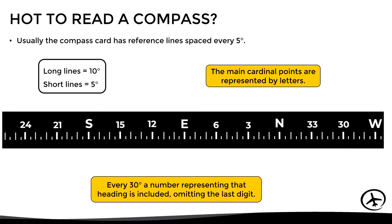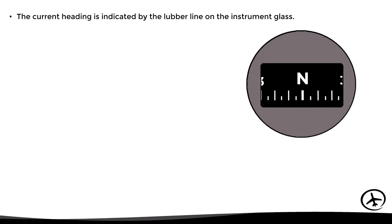For example, the number 6 represents heading 060, the number 12 represents heading 120, the number 24 represents heading 240, and so on. The current heading is indicated by a lubber line on the instrument glass. For example, in this case the compass indicates a north heading.